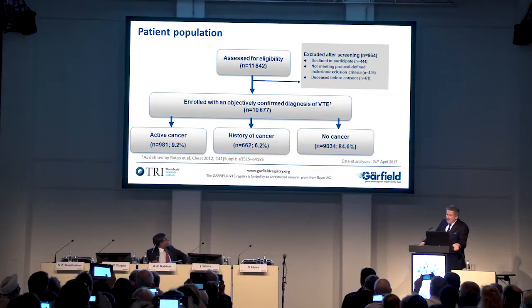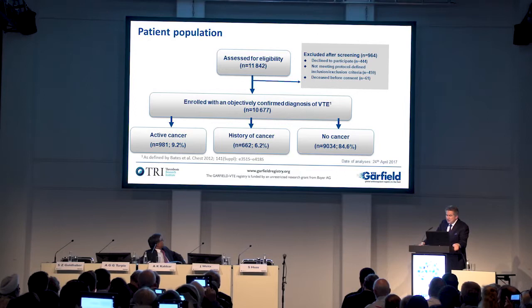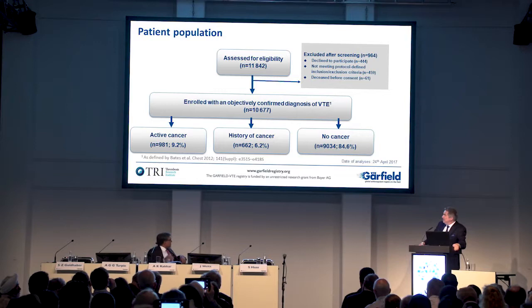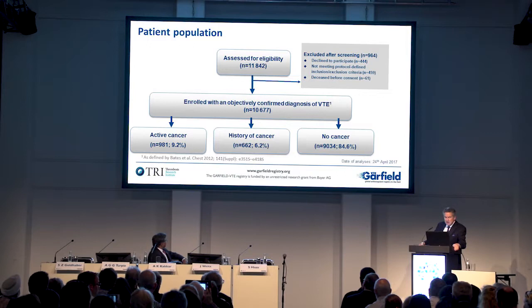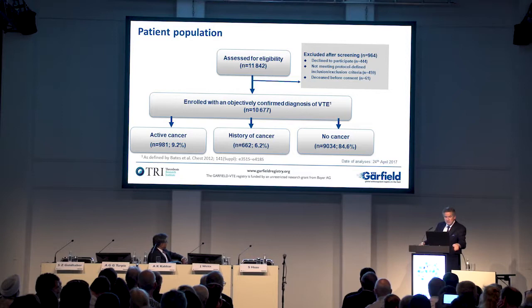We've seen this flow chart: of the 10,677 patients with objectively confirmed VTE, 981 — or 9.2% — had active cancer; 662 — or 6.2% — had a history of cancer; and the remaining 9,034 patients, or 85%, had no cancer.